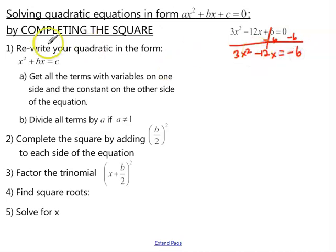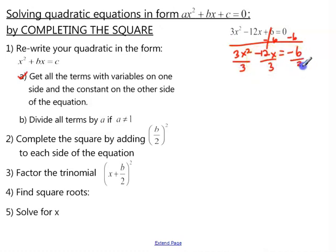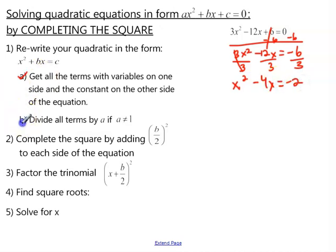That's our first step: getting all the terms with variables on one side and the constants on the other side. The second step, we need to divide all the terms by a if a does not equal 1. Since we have an a of positive 3, we want to divide every single term by positive 3. That cancels, and we have x squared minus 4x equals negative 2. Now we're done with step 2.